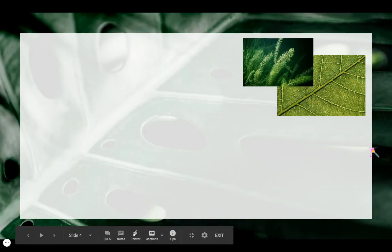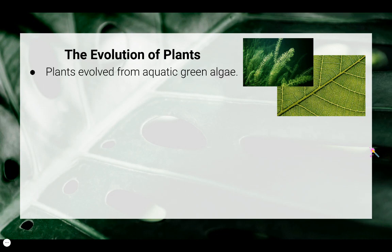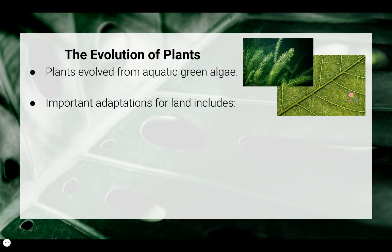Next we're going to be talking about the evolution of plants. Plants have evolved from their aquatic ancestors — green algae. We're going to look at the important adaptations that allowed plants to move from an aquatic environment onto land. There are three important adaptations we'll cover, and most of these you'll learn in more detail later throughout this unit.